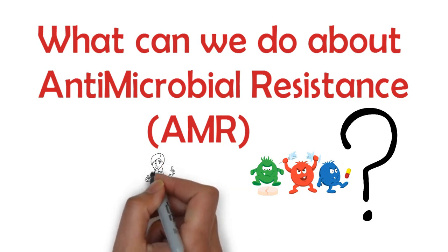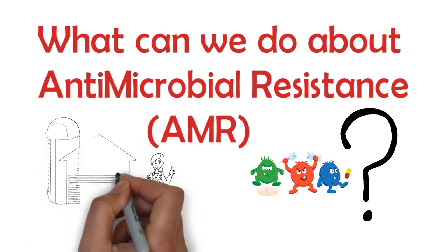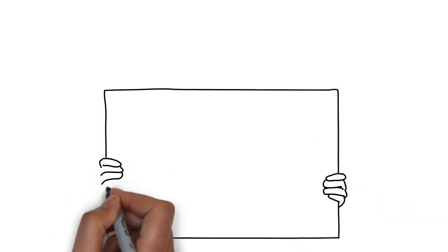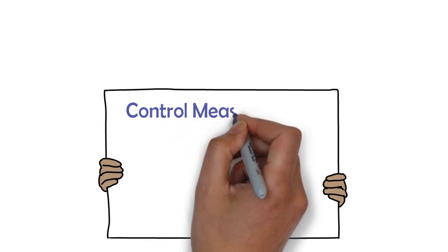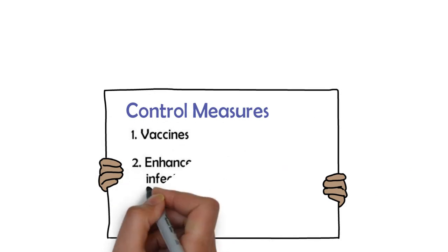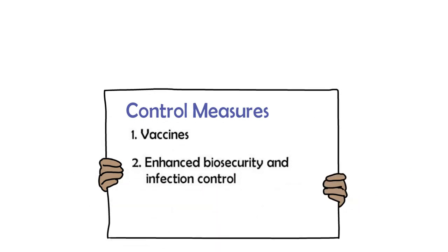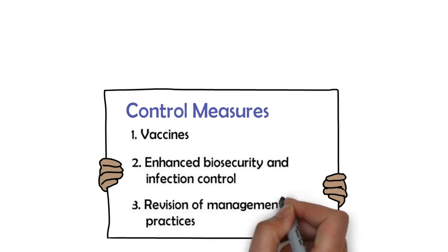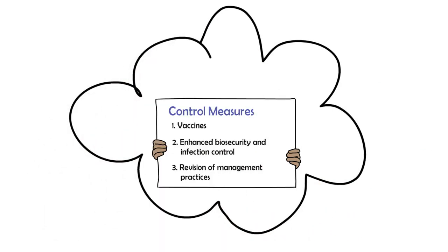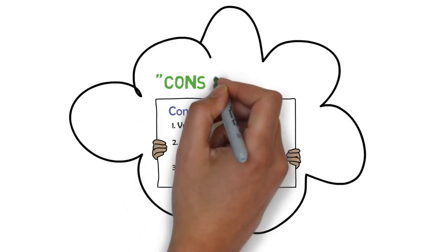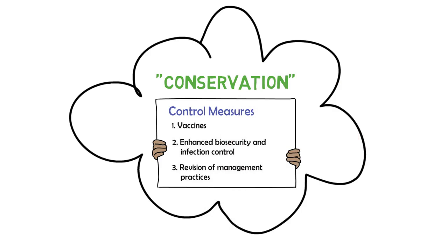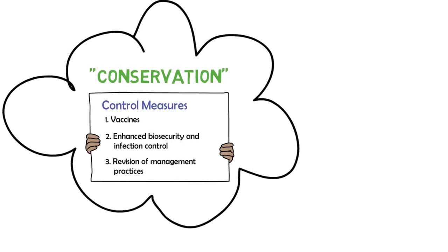In the first instance, there are some great control measures that are in use every day in veterinary science and animal production settings that have already driven down the use of antibiotics in animals and continue to do so. Some examples of these control measures are: 1. Vaccines, 2. Enhanced biosecurity and infection control, and 3. Revision of management practices in production units. These measures work towards preventing infection and are broadly encapsulated by the term conservation. While these initiatives are not directly related to the use of antimicrobials, they clearly affect whether antimicrobials are required in the first place and are therefore a very important consideration.